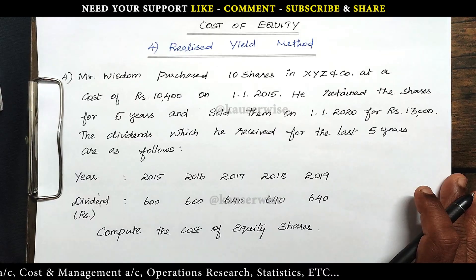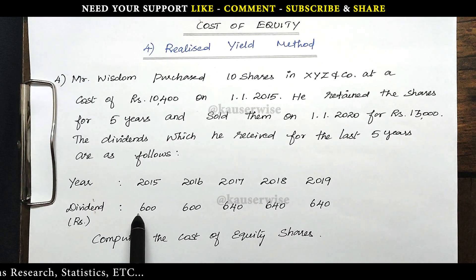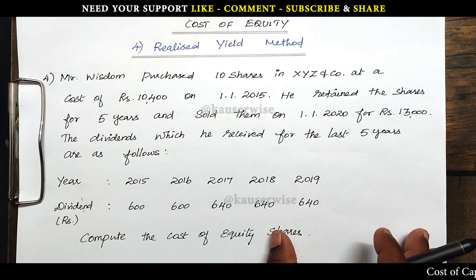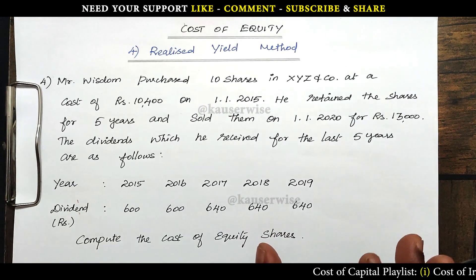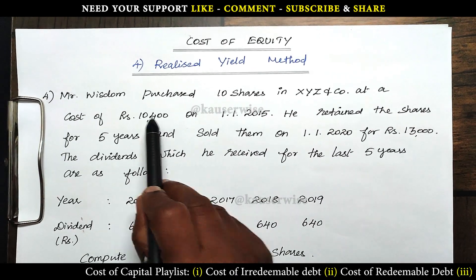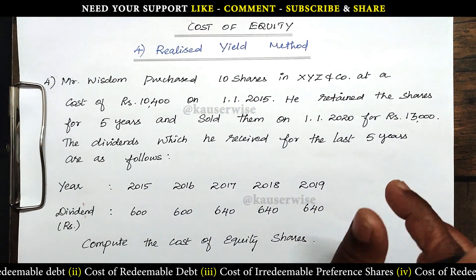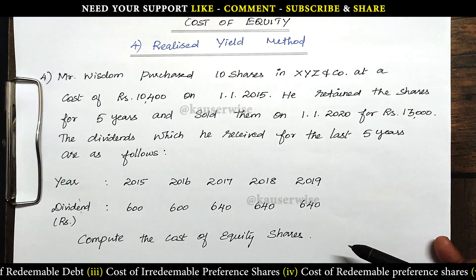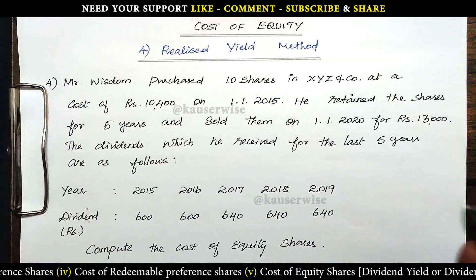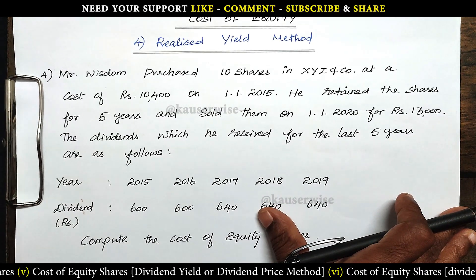In order to find out the return on investment, first we need to find out the net income per annum. Take the average dividend received — total dividend divided by 5 gives average dividend per year. Then add average profit per annum. The shares were sold for Rs. 13,000 and purchase price was Rs. 10,400; the difference of Rs. 2,600 divided by 5 gives average profit per annum. Add these two figures to get net income, then divide by initial investment of Rs. 10,400.